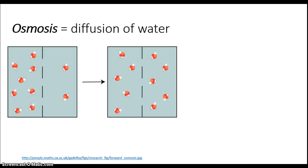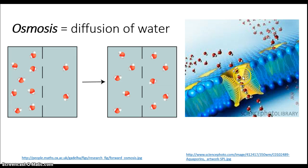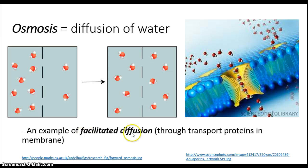Water, too, is an example of a molecule that is required in large quantities by cells. Sometimes this molecule can have trouble getting across the membrane in large enough quantities, so cells have special proteins called aquaporins that function to only bring in water — making this an example of facilitated diffusion, that is, diffusion that is helped along by a protein embedded in the cell membrane.